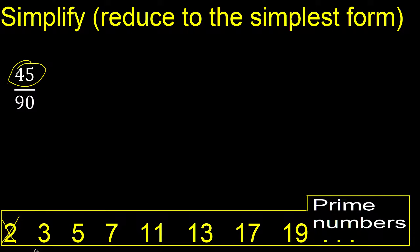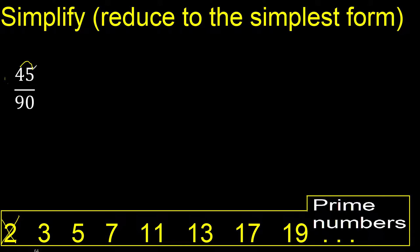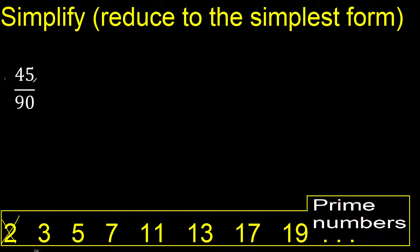Divided by 3: 45 and 90 can be divided by 3 because the sum 4 plus 5 is 9, and 9 can be divided by 3. For 90, 9 plus 0 is 9, and 9 can be divided by 3. Therefore, both are divisible by 3.